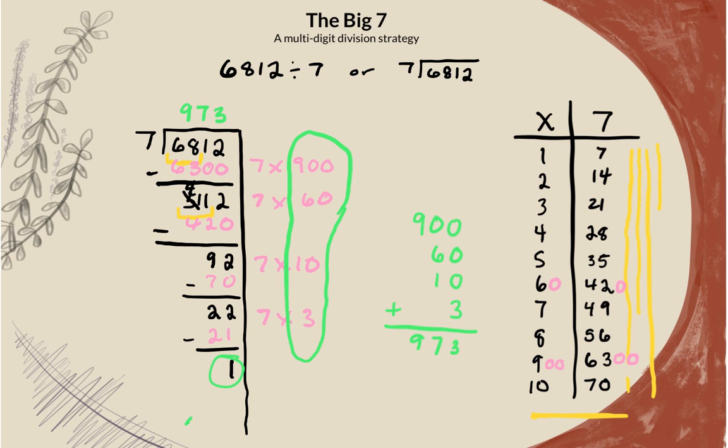And we want to make sure that we don't forget our little remainder. Remainder 1. So, we just found out that when we divide 6,812 by 7, we get 973 remainder 1.